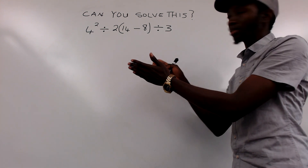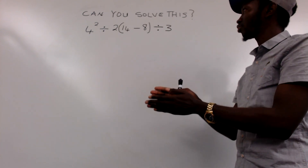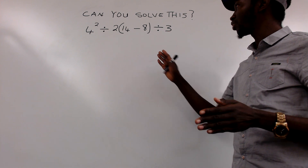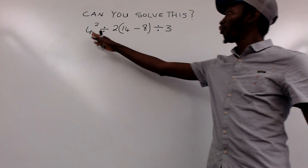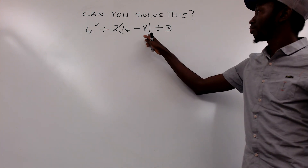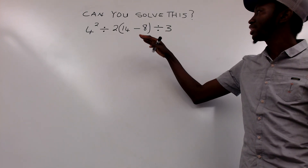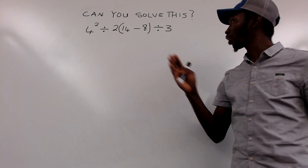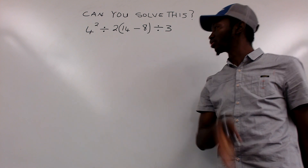Can you solve this? This is a very simple and straightforward question, but we have to take note of how to deal with it. The question reads: four squared divided by two into four minus eight, bracket closed, divided by three. We are required to simplify this and find a final result. This is one of the viral questions and it's going to be very simple and straightforward.